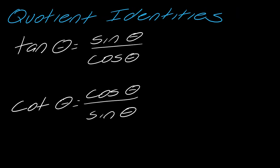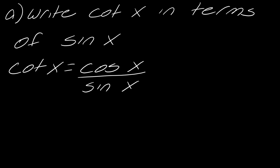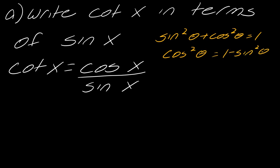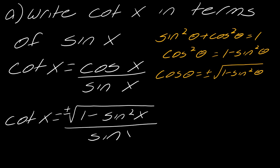Is there anything that relates cosine and sine together? This one right here — sine squared theta plus cosine squared theta equals one. So I can solve this for cosine: cosine squared theta equals one minus sine squared theta, and then cosine theta equals plus or minus the square root of one minus sine squared theta. Now I've got cosine rewritten in terms of sine, so I can rewrite cotangent as plus or minus the square root of one minus sine squared x, over sine x. I've now rewritten cotangent exclusively in terms of sine.